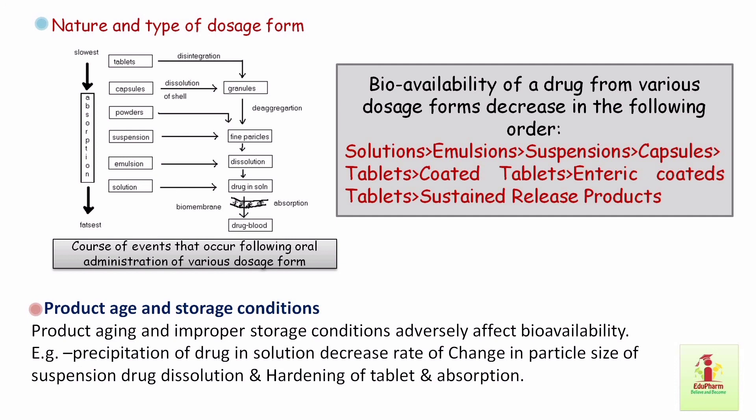Changes that can occur during the shelf life of a dosage form are affected mainly by large variation in temperature and humidity. One example is precipitation of drug in solution, changes in particle size of suspension, drug dissolution, and hardening of tablets.